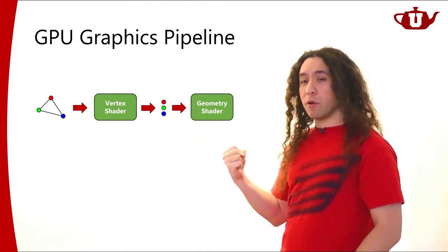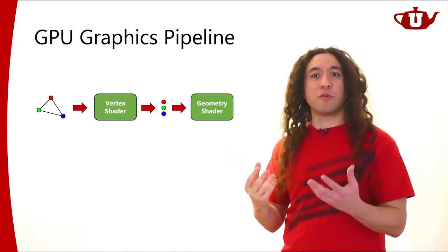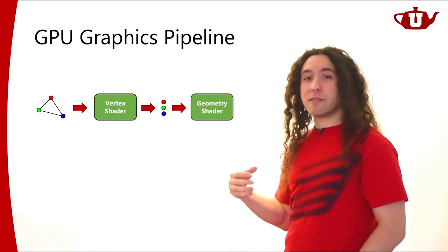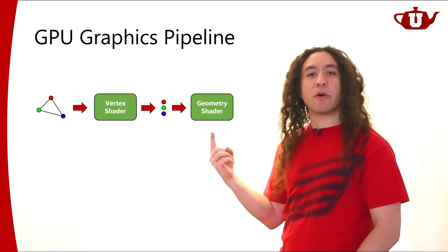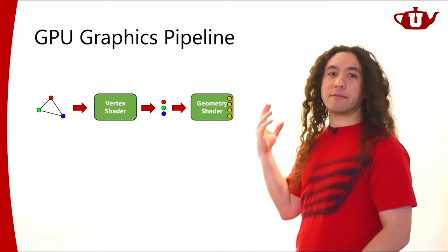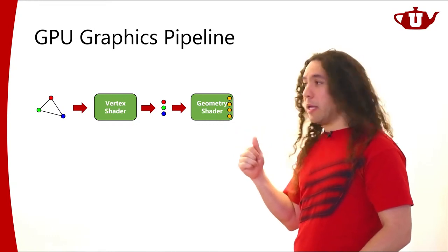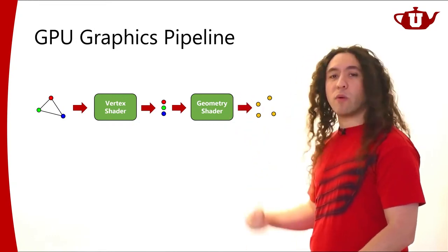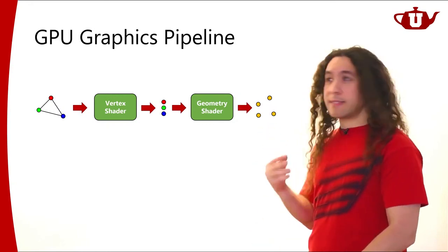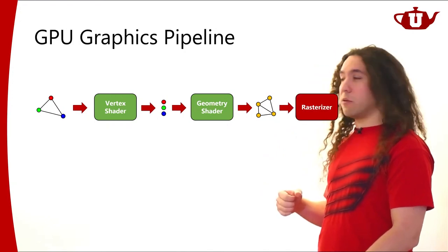After receiving those vertices, the geometry shader will do whatever it wants with them and output whatever it wants. It doesn't have to output the same number of vertices, or anything related to what its input is. It's completely free to output whatever it wants — in this case I'm outputting four vertices. Those four will form some primitive, like triangles, and that will be sent to the rasterizer.